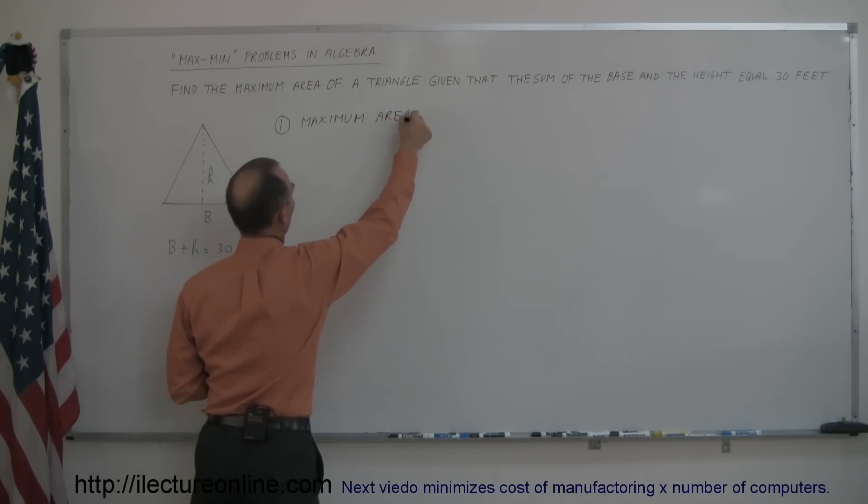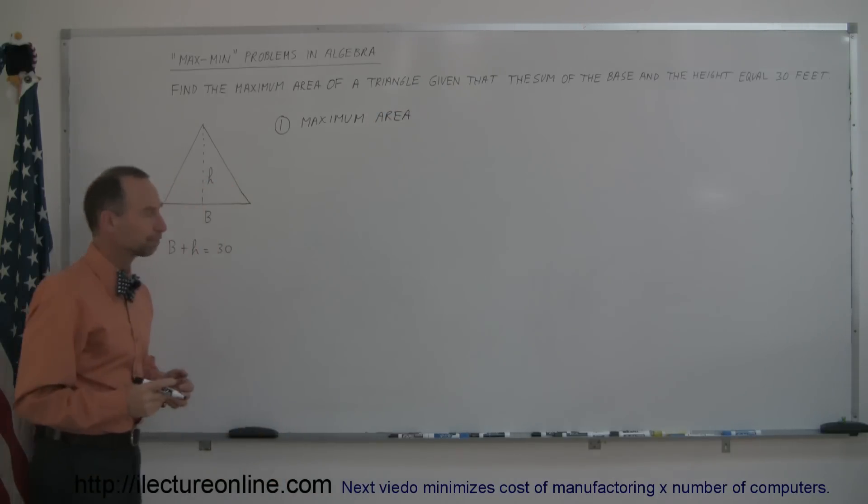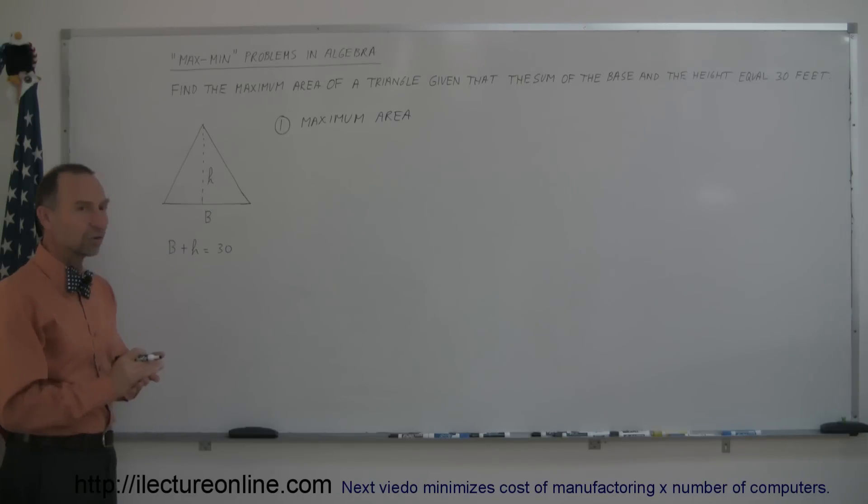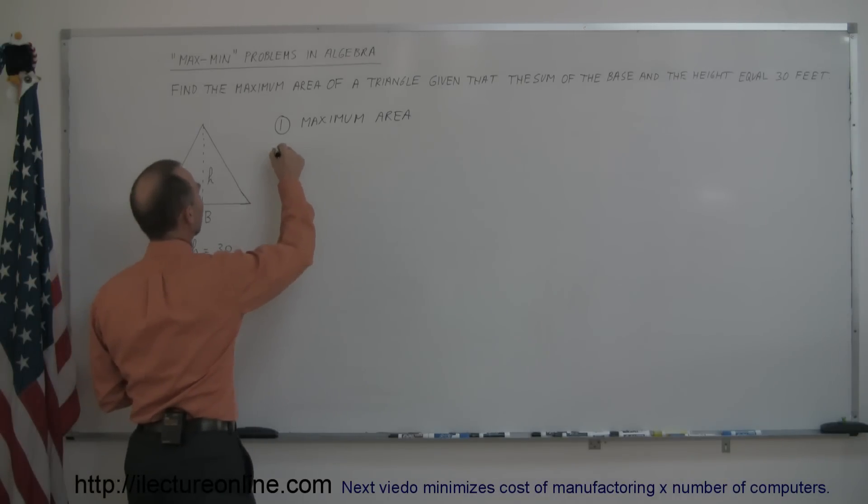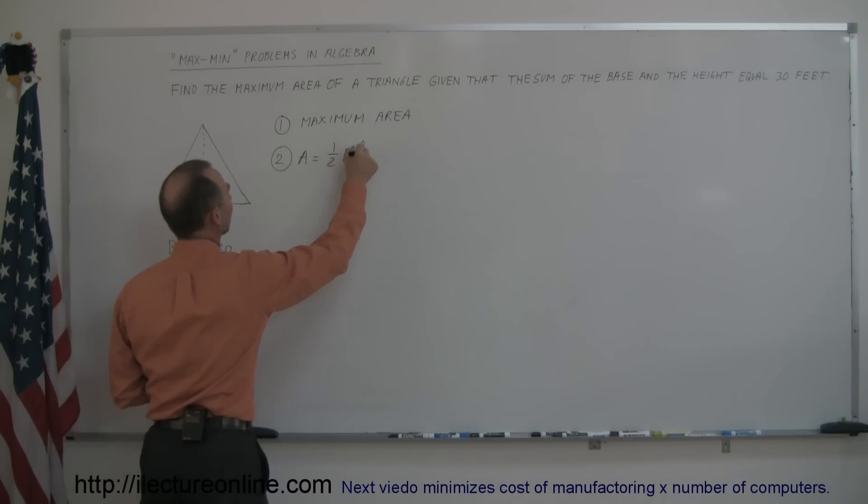The second thing is you want to find an equation for that. So the equation for the area of a triangle is equal to one-half the base times the height.